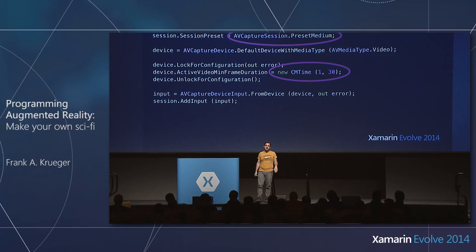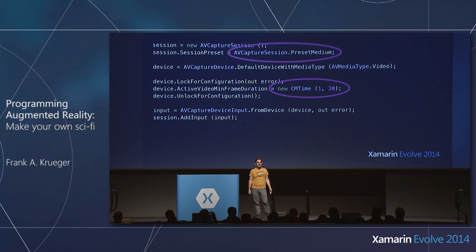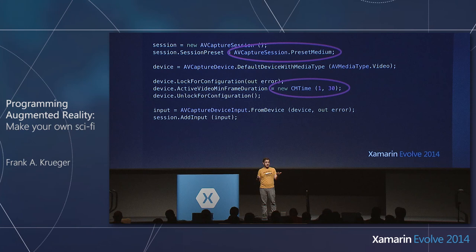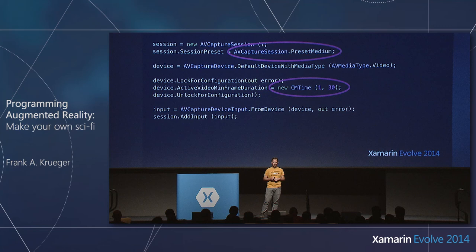I want to show you the actual code needed to access the camera — this will look different because most of us access the camera through the high-level API, where we just ask the OS for an image. That's not good enough here; we want real-time programming, so we connect to the camera in the background without presenting any user interface. As soon as it gets a video frame, we want to be notified. There's ugly boilerplate code, but it's only about 10 or 15 lines.